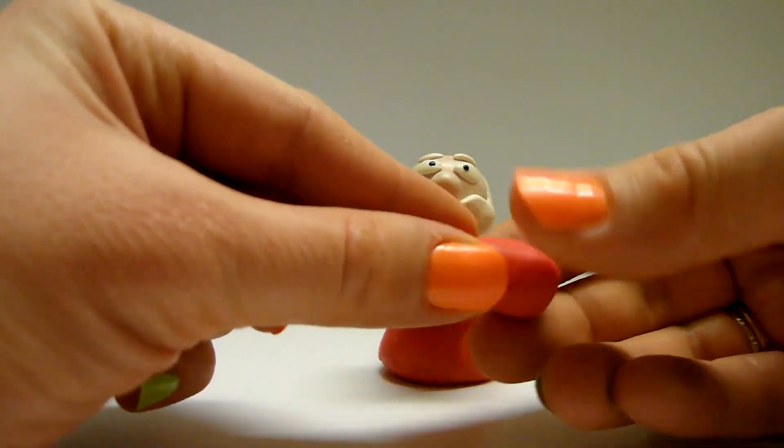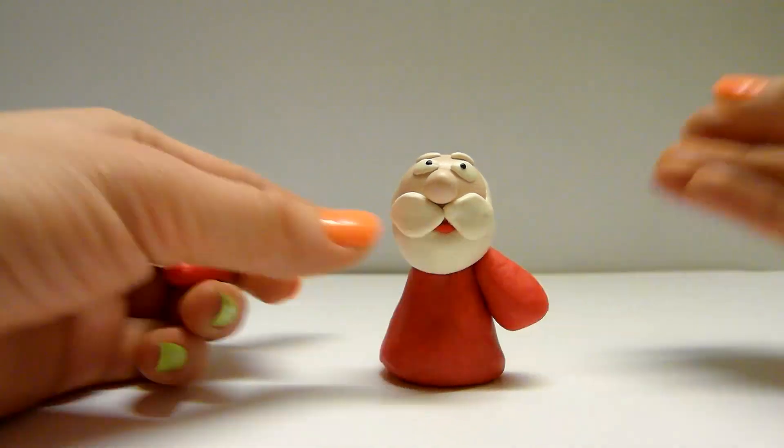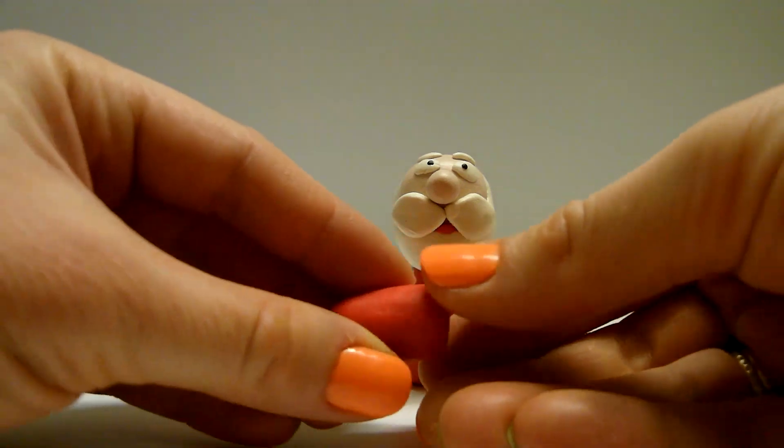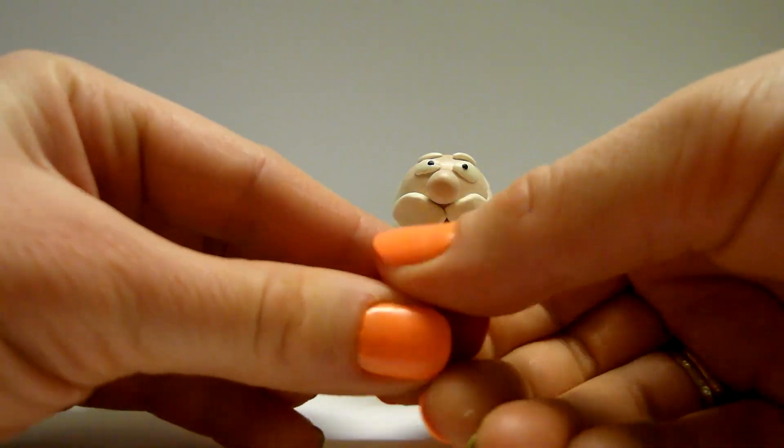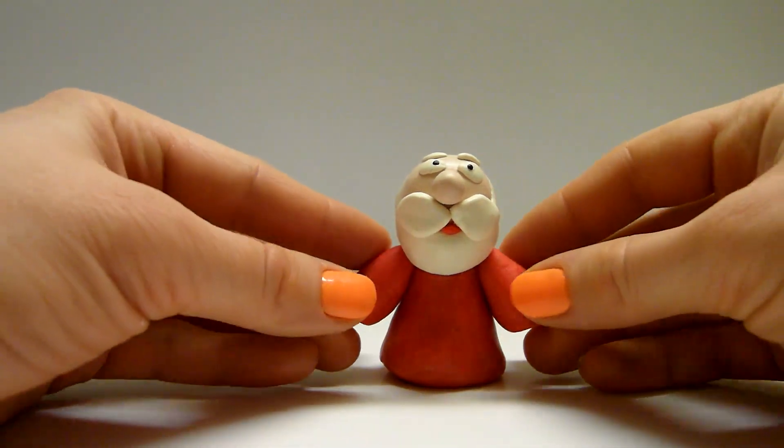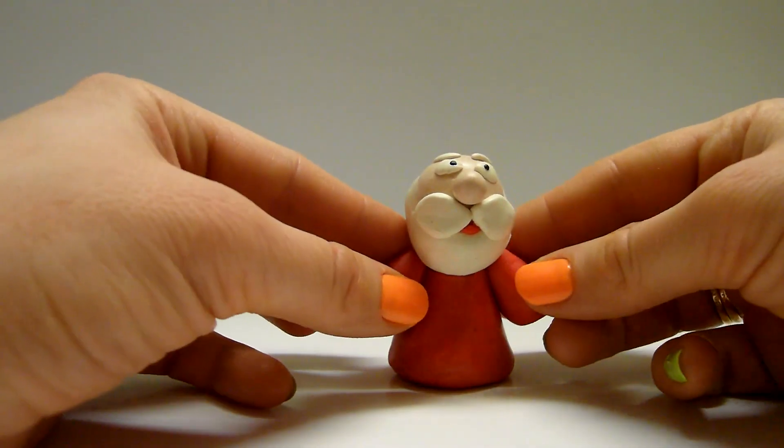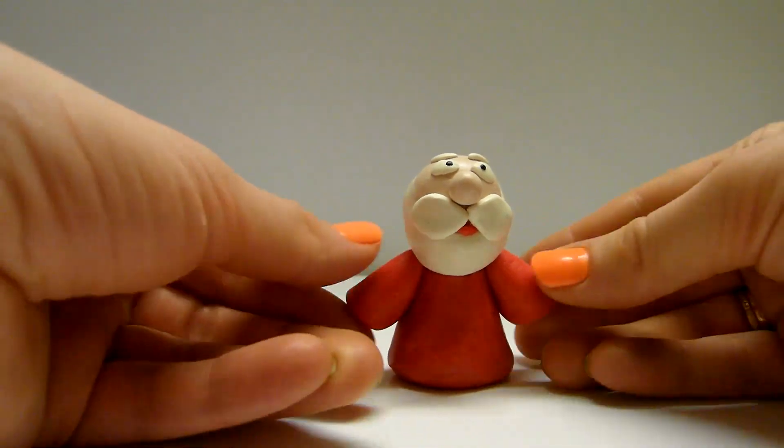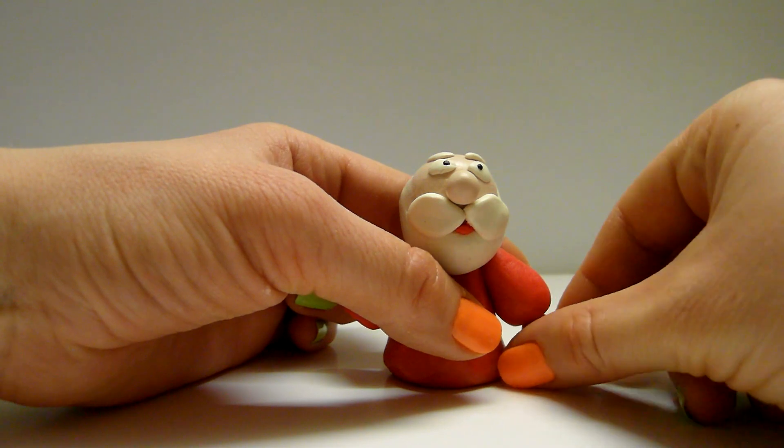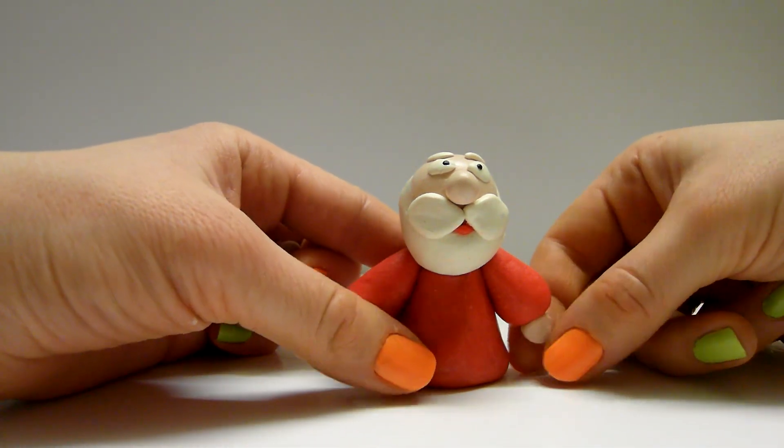Let's make coat sleeves of red clay cones. Attach them on the coat sides. Make hands of small parts of beige clay. Fix them under the sleeves.